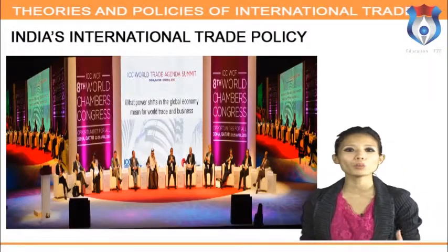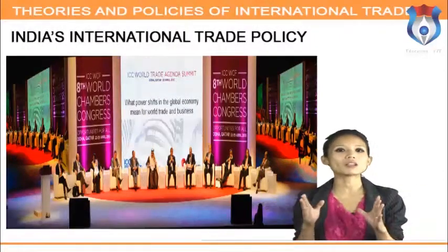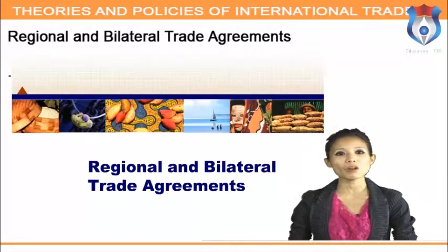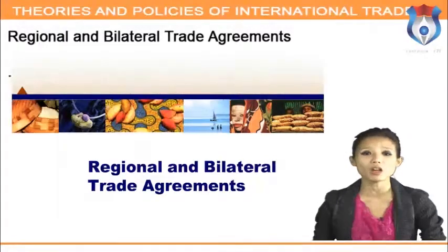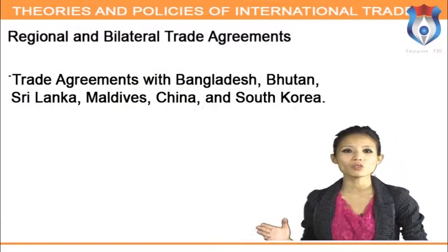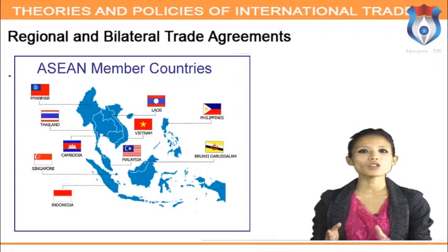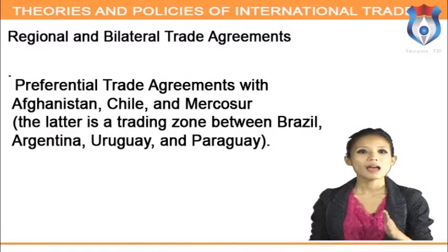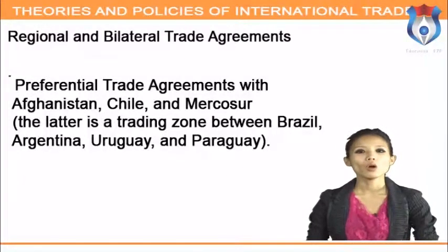India is now aggressively pushing for a more liberal global trade regime and has assumed a leadership role among developing nations in global trade negotiations, playing a critical part in the Doha negotiations. India has recently signed trade agreements with its neighbors and is seeking new ones with East Asian countries and the United States. Trade agreements include those with Bangladesh, Bhutan, Sri Lanka, Maldives, China, South Korea, the India-Nepal Trade Treaty, a Comprehensive Economic Cooperation Agreement with Singapore, framework agreements with ASEAN and Thailand, and preferential trade agreements with Afghanistan and Mercosur — the trading zone comprising Brazil, Argentina, Uruguay, and Paraguay.